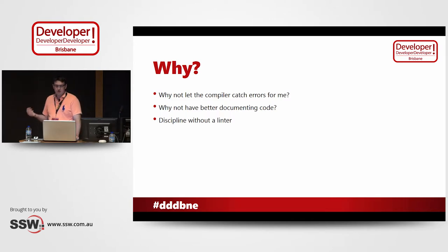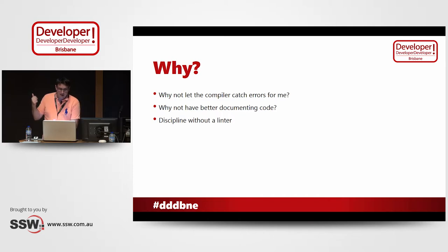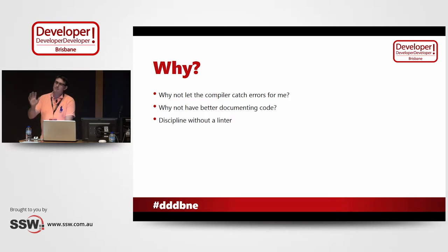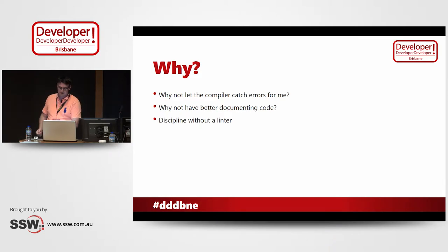So why use it? There's no shame in saying, why not let the compiler catch dumb errors for me? It can be your first unit test — it can even be your only unit test if that's the way you roll. Why not have better documenting code? We're going to be annotating some things here and the compiler can help you and tell you what's coming out. And it can enforce some discipline. If you've got a big team, you can have some discipline there without having to use a linter and have lots of rules — the compiler has a lot of these things built in.